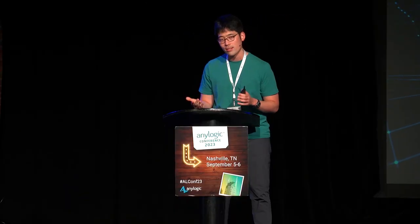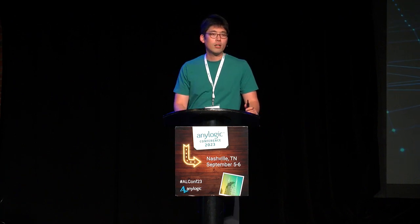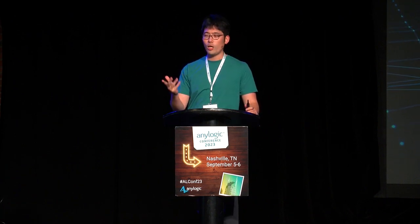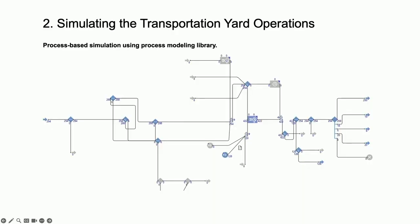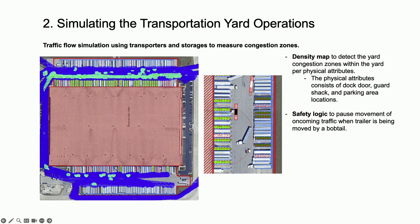The customer later asked: we can now measure capacity for high-stress seasons, but what about design? What about traffic congestion? We want to see choking points within the yard. After three to four weeks of development, we created a new model — the free traffic flow model — using mainly the material handling library with transporters. Thank you AnyLogic for updating the storage system; it made a significant difference in model run performance.